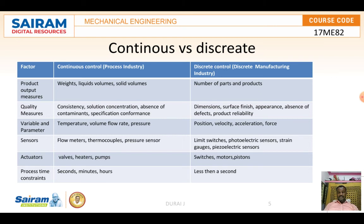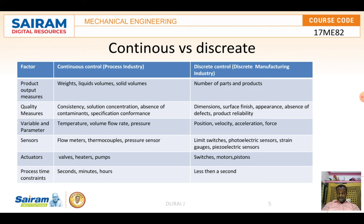The continuous and discrete control factors are tabulated. For product output measures, continuous control uses weights, liquid volume, and solid volumes. Discrete control uses number of parts and products. For quality measures, continuous process uses consistency, solution concentration, absence of contaminants, and specification of conformance. Discrete control quality measures include dimensions, surface finish, appearance, and absence of defects.